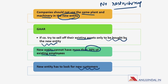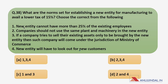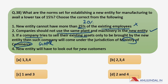Now let's answer the question. The first option states the new entity cannot have more than 25% of existing employees — this is wrong, it is 20%. The second option says the company should not use the same plant and machinery in the new entity — this is correct. The third option says the company will come under the jurisdiction of the Ministry of Commerce — this is wrong, it is the General Anti-Avoidance Rule. The fourth option says the new entity will have to look for new customers — this is also correct. So the correct norms are options 2 and 4, making the answer option D.